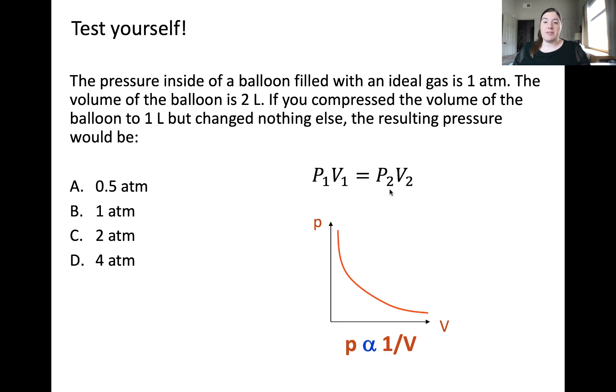P2 would be what we're solving for here, the final pressure once we compress the balloon. When we do the math, or even just thinking about this conceptually, if we're decreasing the volume of the balloon by half, we would expect the pressure to double. This means the pressure would go from 1 atmosphere to 2 atmosphere, with the correct answer here being answer choice C.